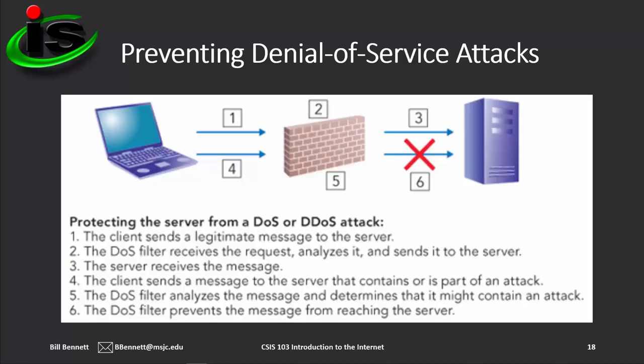This image describes how a DoS filter works to prevent an attack on a server. First, the client sends a legitimate message to the server — the DoS filter receives the request, analyzes it, and sends it to the server. Next, a client sends a message that contains or is part of an attack — the DoS filter analyzes the message, determines it might contain an attack, and prevents the message from reaching the server.